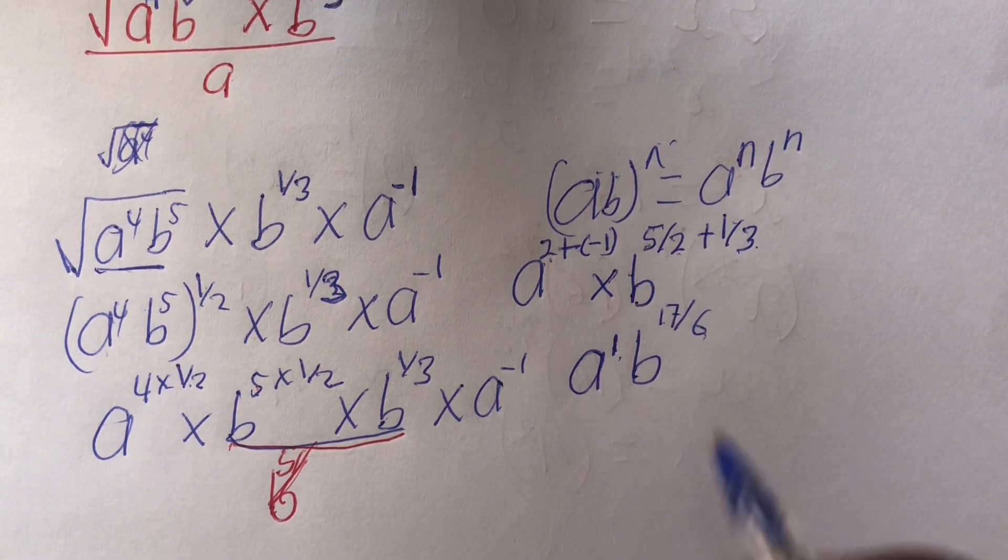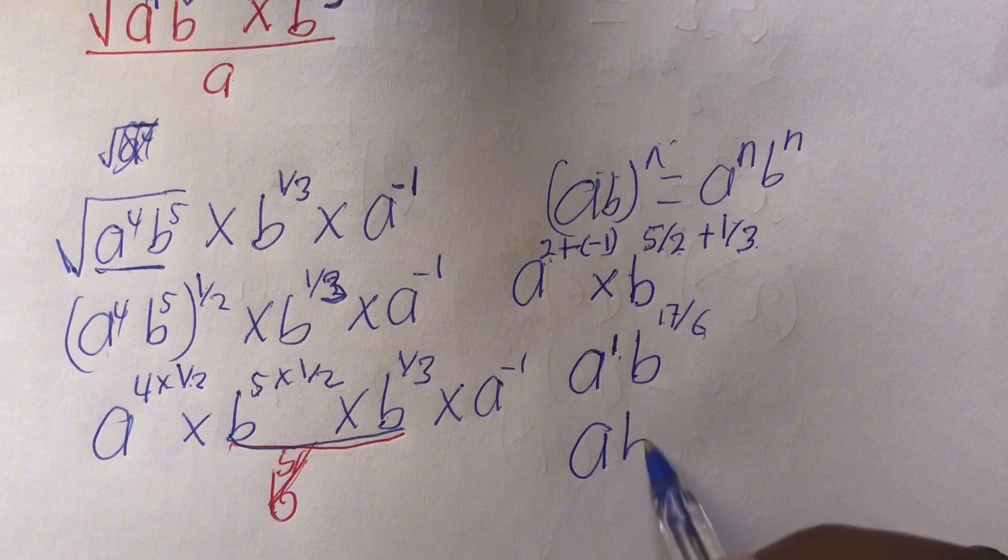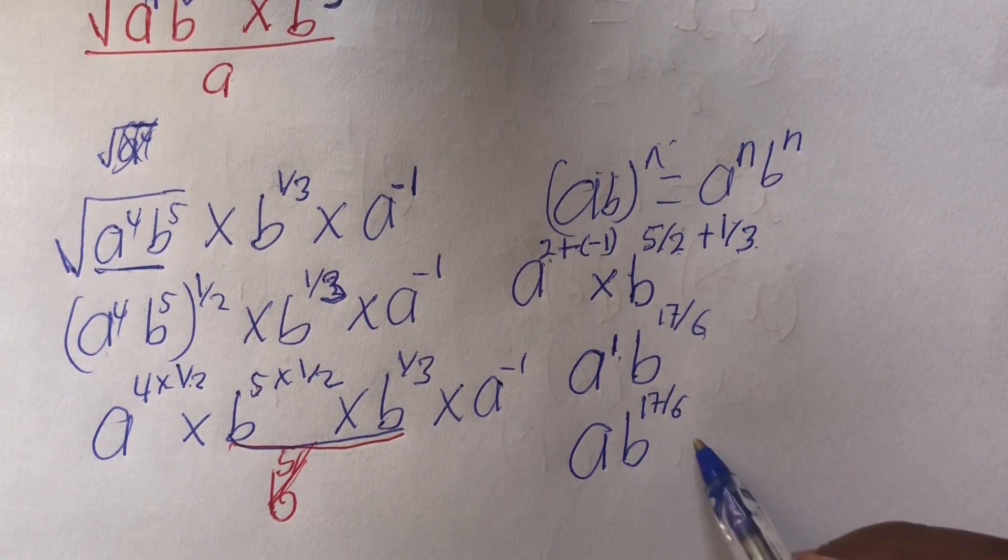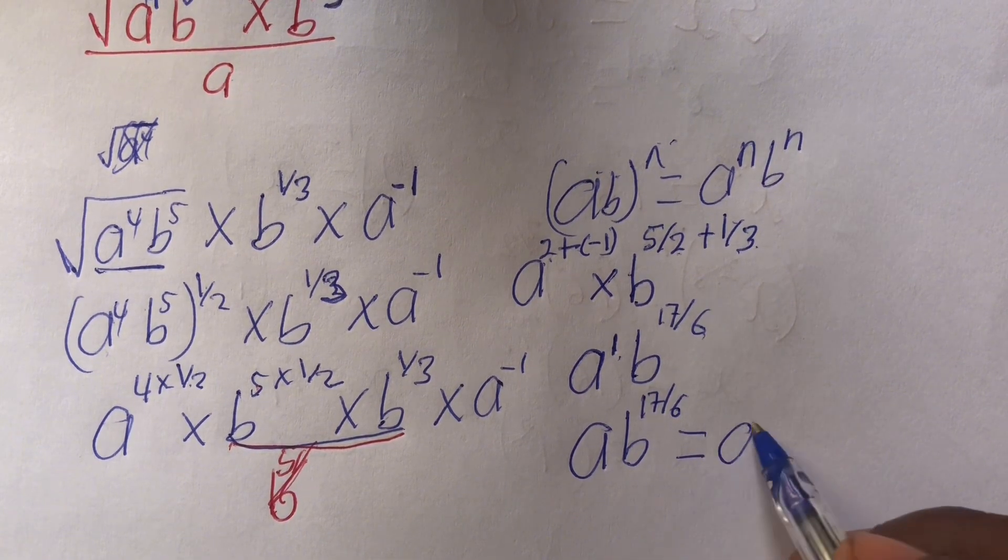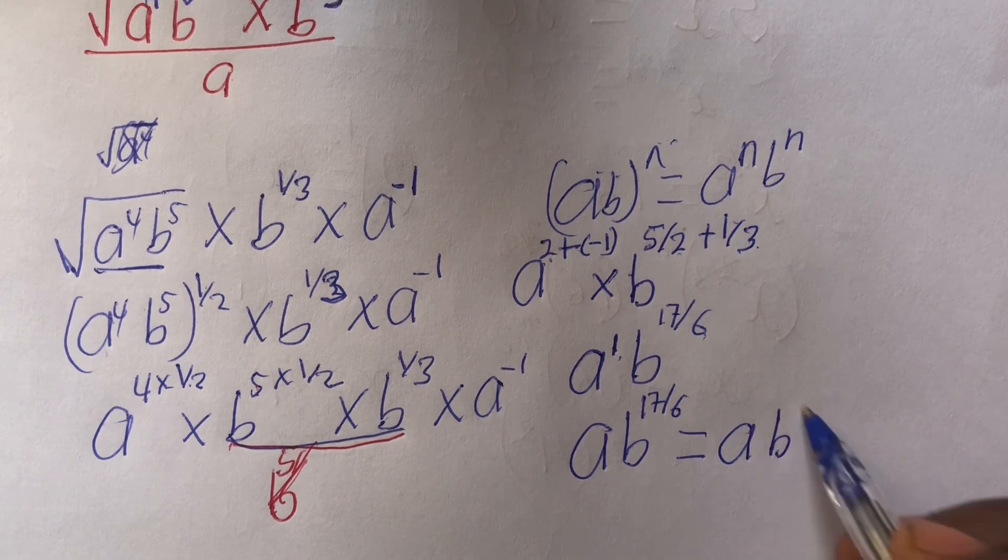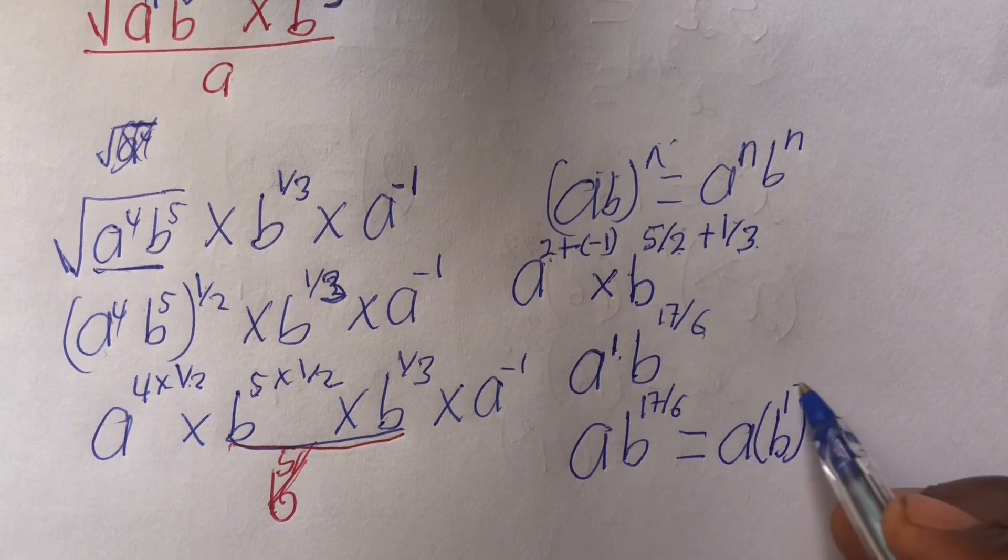So this is the same as a times b power 17 out of 6. Which can be written as a times b power 17.